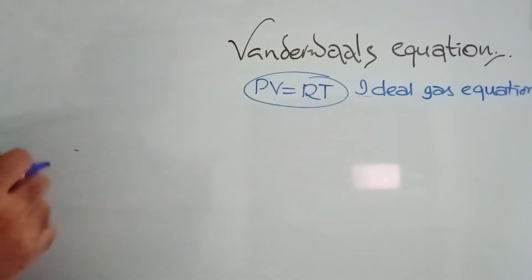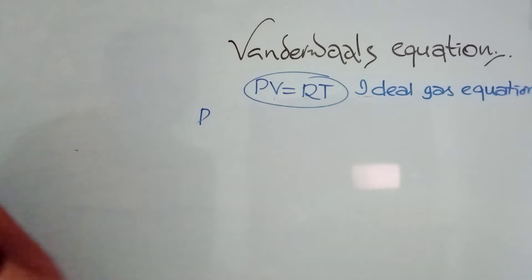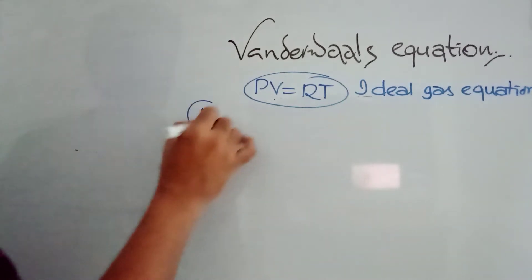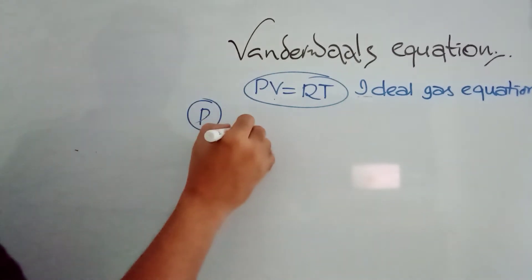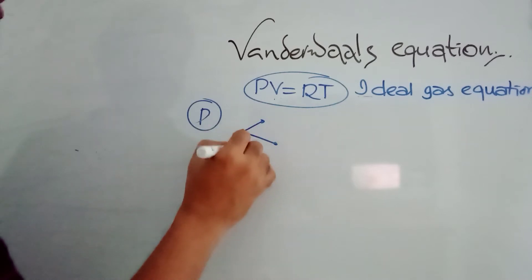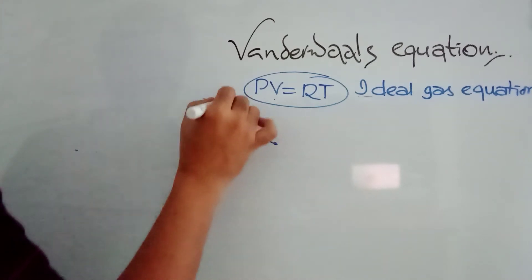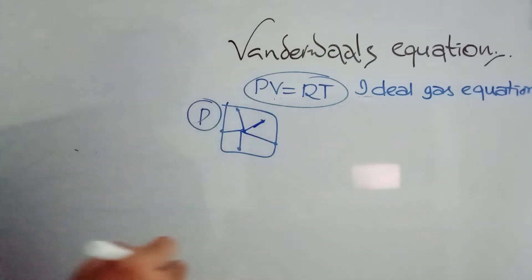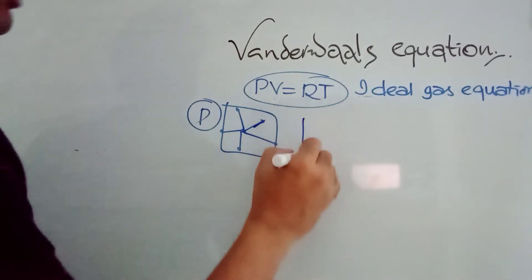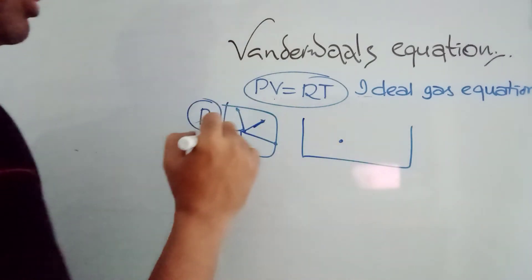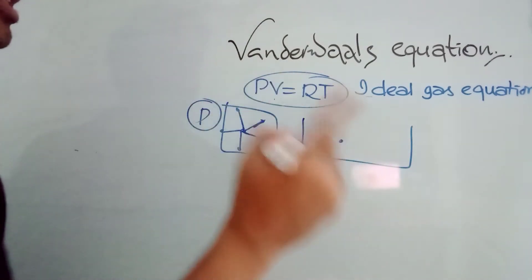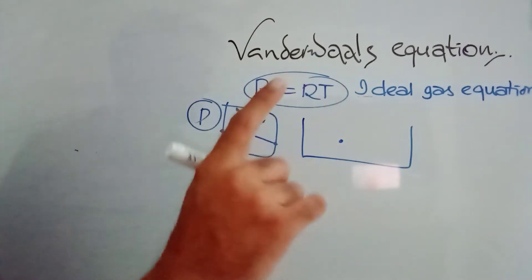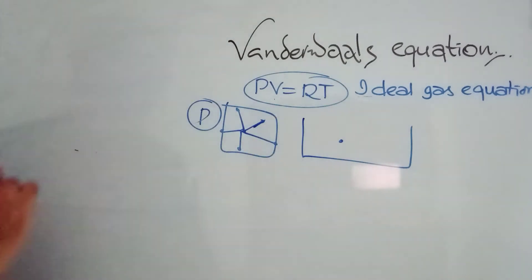The problems we are facing in kinetic molecular theory are about pressure. According to kinetic molecular theory, the pressure is because of the molecular collisions made on the walls of the container. The gaseous molecules collide on the walls and create pressure. But kinetic molecular theory also says there are no attractions and no repulsions between gaseous molecules, which is absolutely not correct.